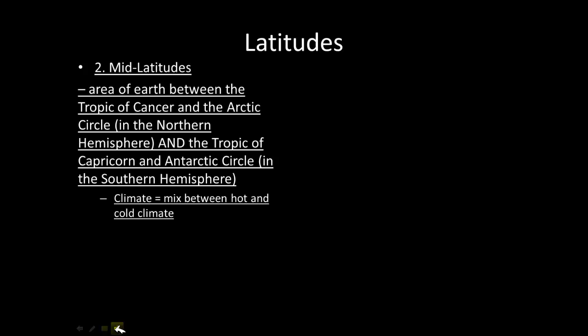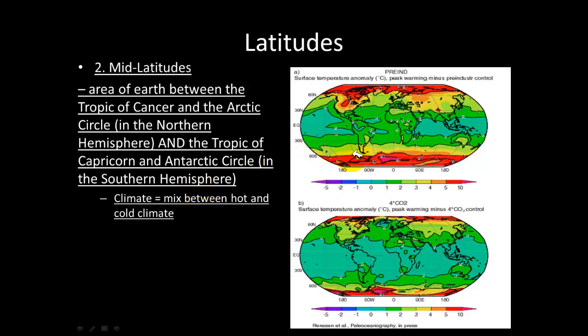The next latitudes are the mid latitudes. They fall between the Tropic of Cancer and the Arctic Circle in the northern hemisphere, and between the Tropic of Capricorn and the Antarctic Circle in the southern hemisphere. The climate in the mid latitudes is a lot cooler than in the low latitudes, because this part of the earth is further away from the sun. Think of the earth as a globe — the fat part, representing the equator, is closest to the sun.